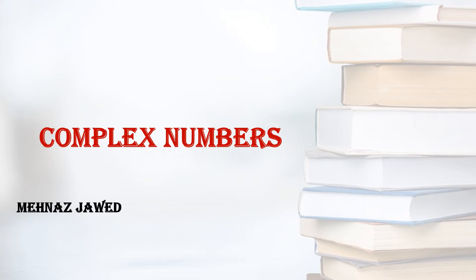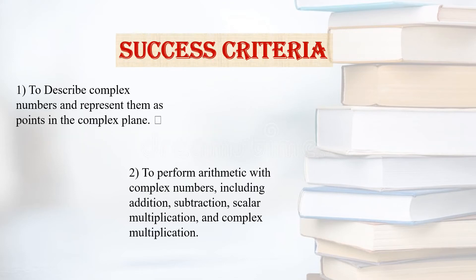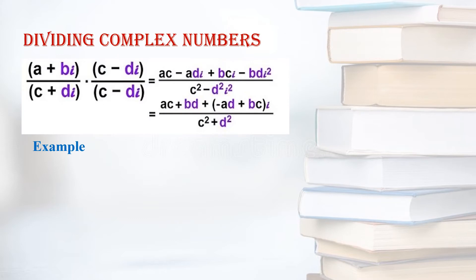Let's learn how to divide complex numbers. The most important thing is that if you have to divide two complex numbers, you have to take the conjugate of the denominator and multiply and divide by it to get the resultant. You can understand the whole general formula by using an example.